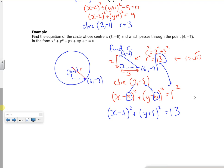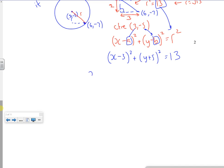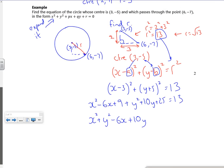Now if you look, the question wants you to expand it. So just very quickly, I've got x² - 6x + 9. I've got y² + 10y + 25 = 13. Put it in order, so I've got x² + y² - 6x + 10y, because that's the order the question wants.